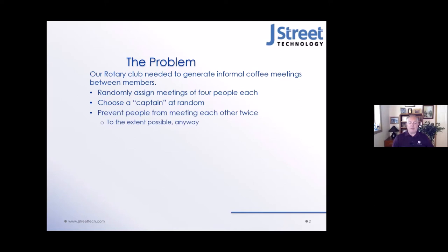We also wanted to prevent people from meeting each other twice. The idea was that if four people — let's say A, B, C, and D — met at a meeting and we recorded that they met, we wanted to make sure that none of those pairs met each other again until it was necessary. Eventually you run out of people you haven't met, but we wanted to keep having meetings between unique people who had never met each other at one of these coffee meetings.